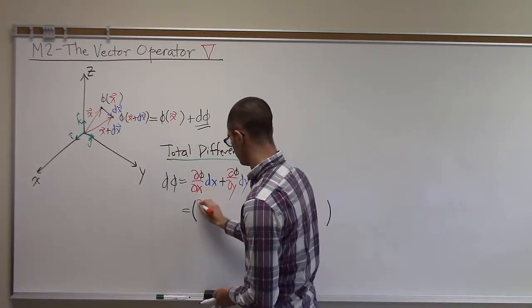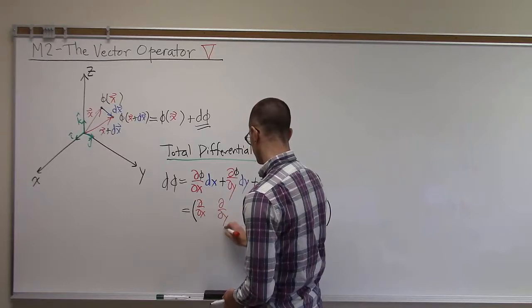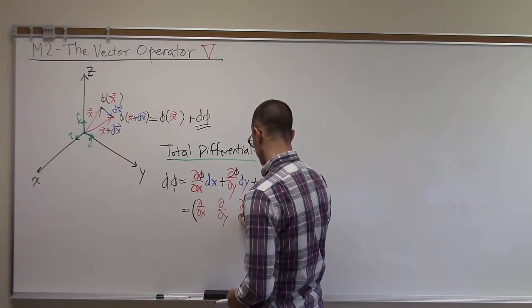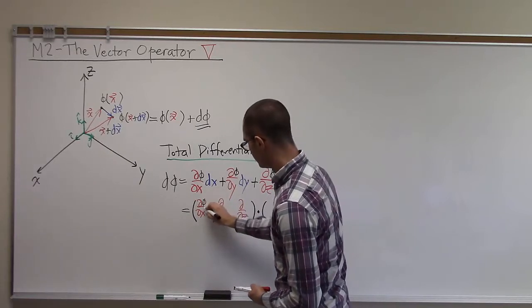So I'm going to have d phi by dx, d phi by dy, d phi by dz times phi.